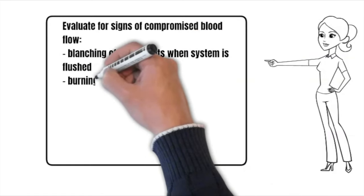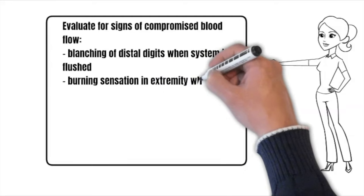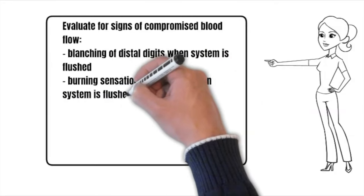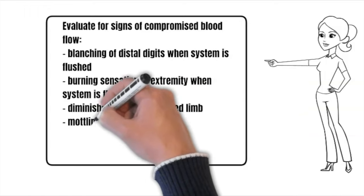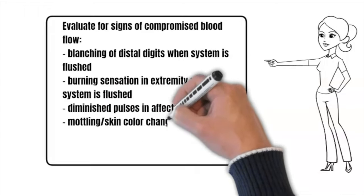Burning sensation in extremity when system is flushed, diminished pulses in affected limb, mottling, skin color changes, and temperature changes in affected limb.